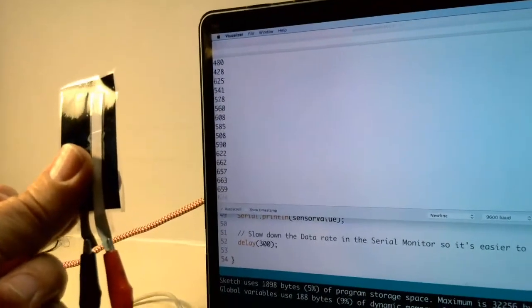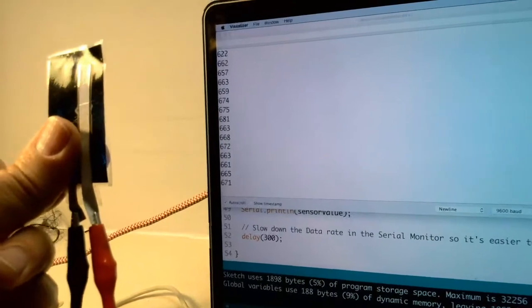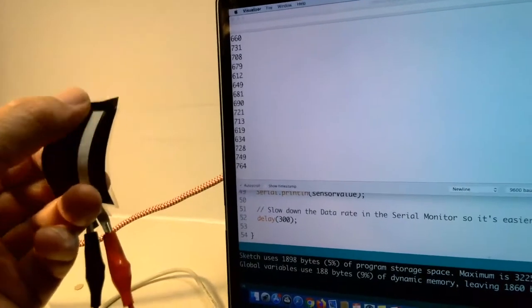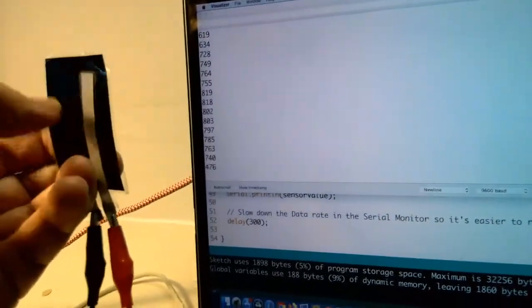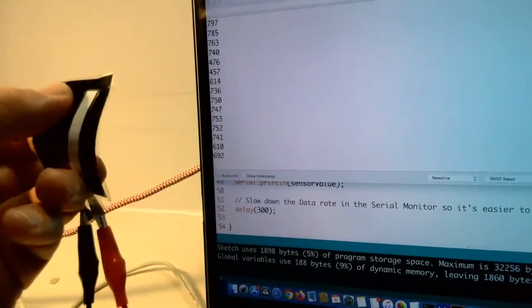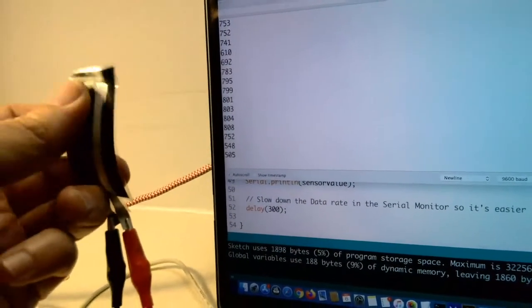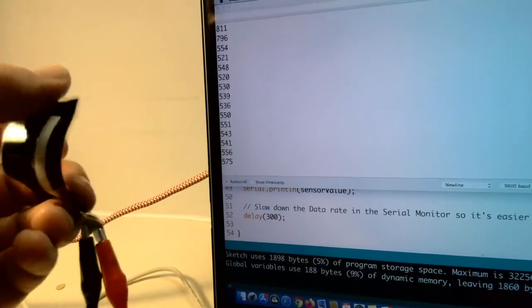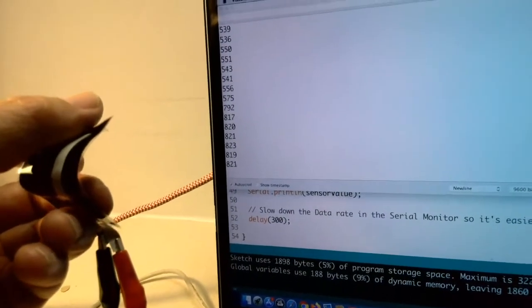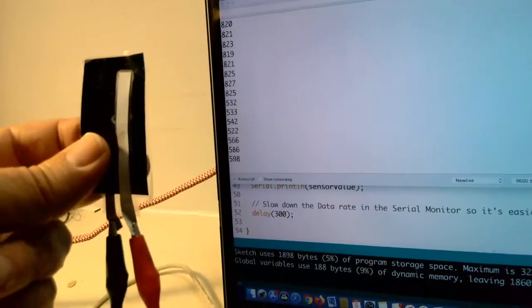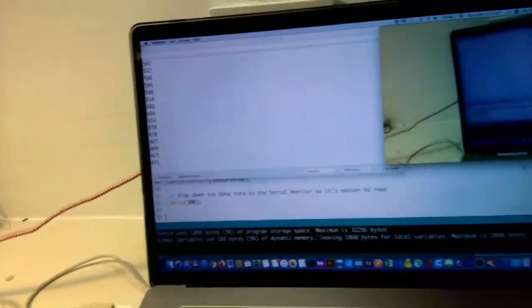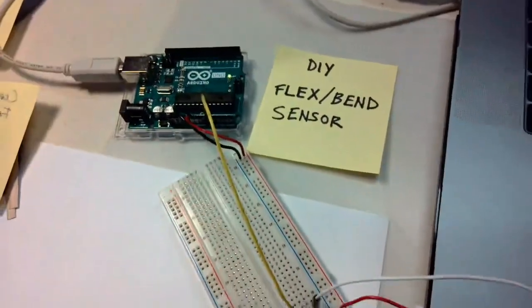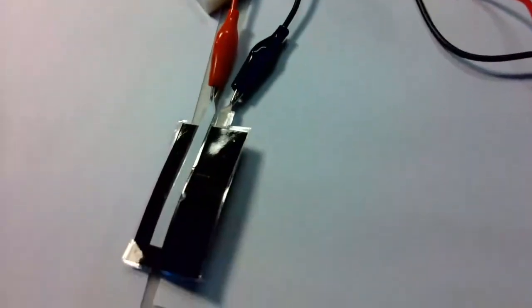Here's the flex sensor set up in Arduino software in the serial monitor. So we just looked at the voltage changing on the multimeter. But now you can see that the numbers in the serial monitor are changing as I flex. So that tells us that it's working. We've got a minimum number of about 530. And then a maximum number of 820 something. So this could be used for an application. So there's the Arduino. Here's the breadboard. And here's the flex sensor.